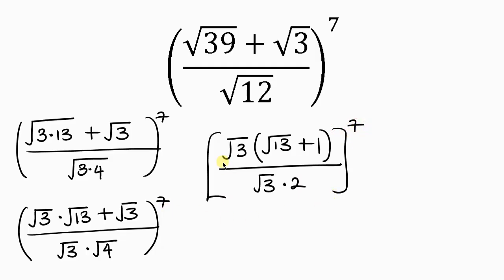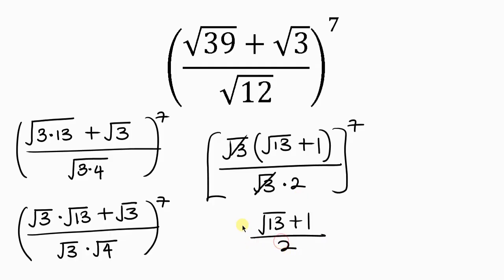The square root of 3 cancels out the square root of 3, leaving behind the square root of 13 plus 1 on the numerator, all over 2, all raised to the 7.